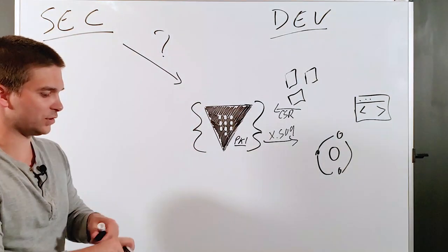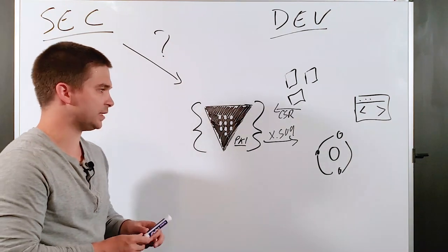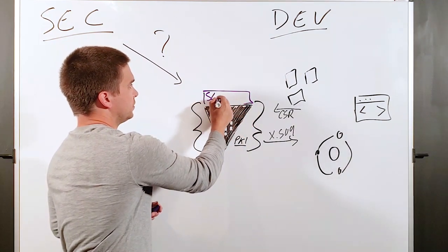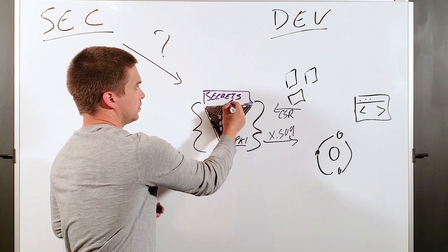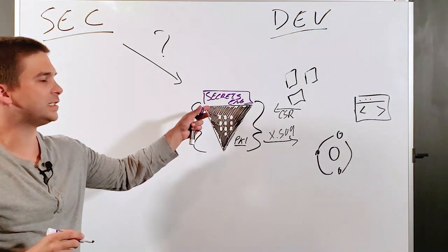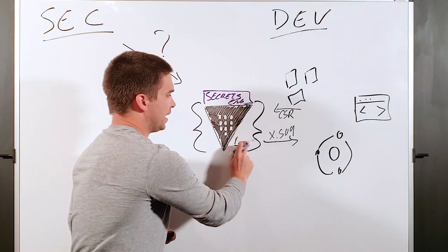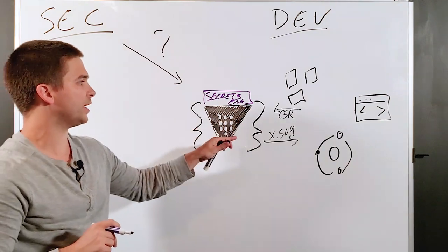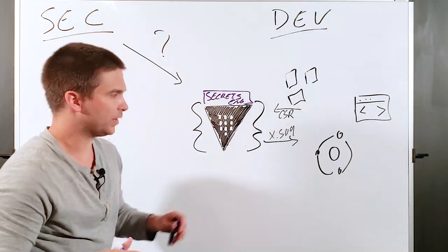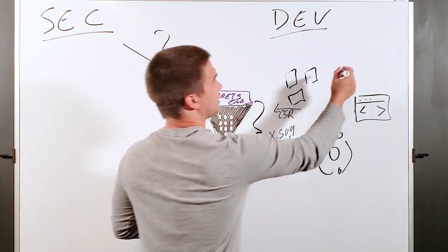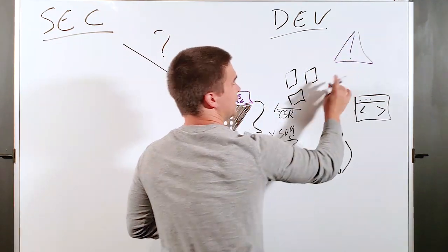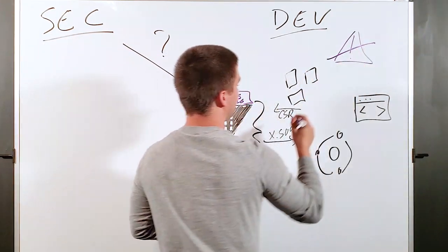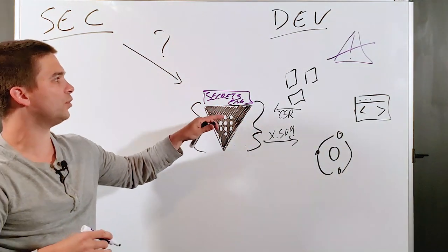The way Keyfactor comes in and solves that is actually to take what we have called our secrets engine that we've replaced the onboard PKI secrets engine that HashiCorp has. What's great about this engine is that we can replace this and not interrupt anything that goes on with development. This is a big thing because development doesn't want to change anything on their configuration on the client side.